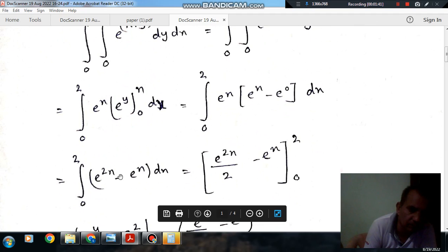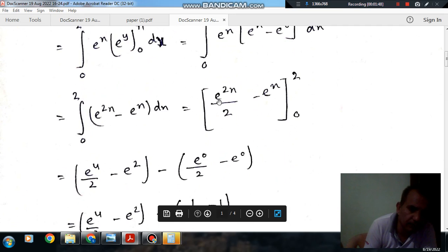And limits are 2 to 0. Again integrating, so it will be (e²ˣ)/2 minus e^x, and limits are 2 to 0.